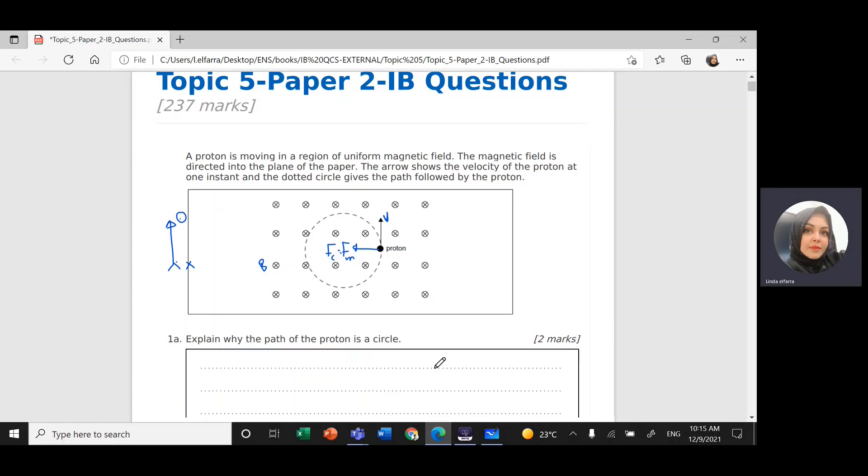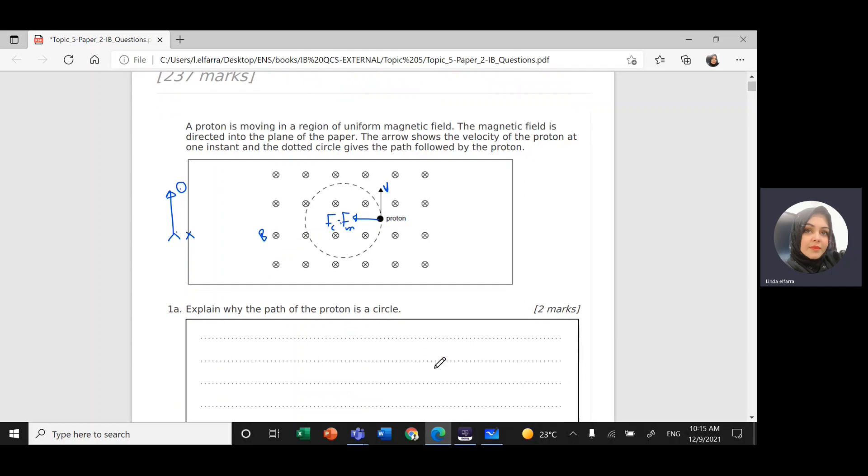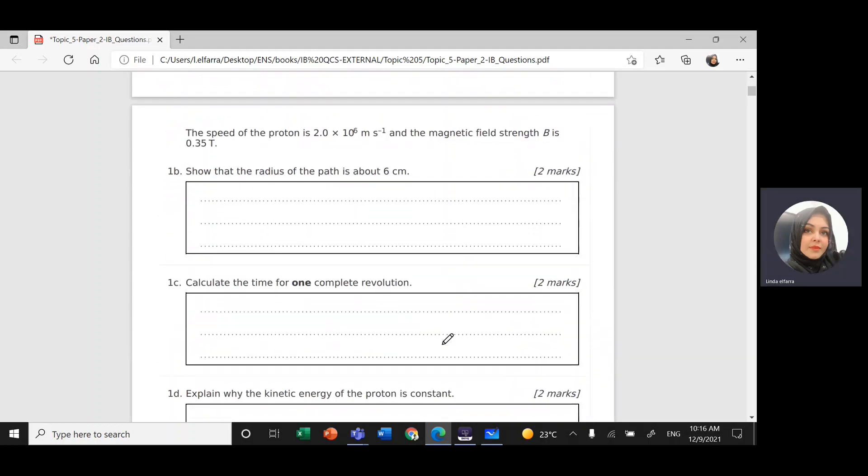So explain why the path of the proton is a circle. Because I have the magnetic field which is responsible for the centripetal force toward the center. Using our right hand: your thumb in the same direction of the movement of the proton, all the fingers inside the page to indicate the direction of the magnetic field. What comes out of your palm will be the magnetic force, which will be toward the center.